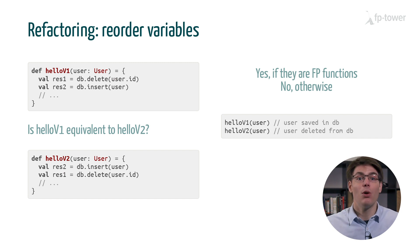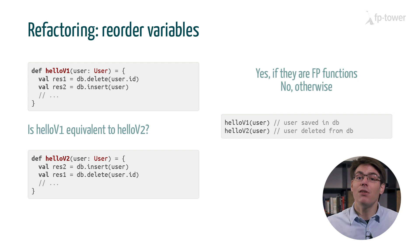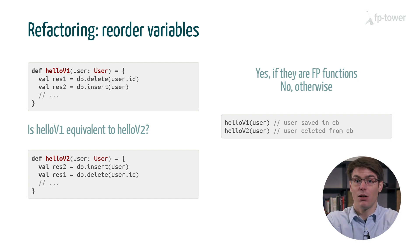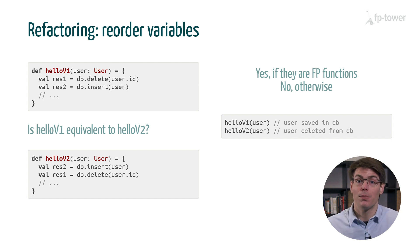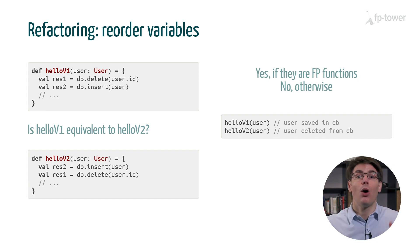However, if fun a or fun b were to perform an action, then we won't have the same guarantee. For instance, if fun a deletes the user from the database and fun b inserts it, this means that hello v1 will first clean up the existing record for this user and then insert it, while hello v2 would insert the user and then delete it. Therefore, in one case we end up with a user updated in the database, and in the other case, a deleted user. More generally, whenever we use a mutable state like a global variable or a database, we cannot reorder function calls.